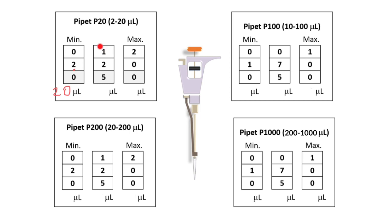The next one is not 125 microliters, because as you see, we can only measure volumes between 2 and 20 microliters with this pipettor. So again, we can put a decimal point between these two numbers, and this would be a measurement of 12.5 microliters.